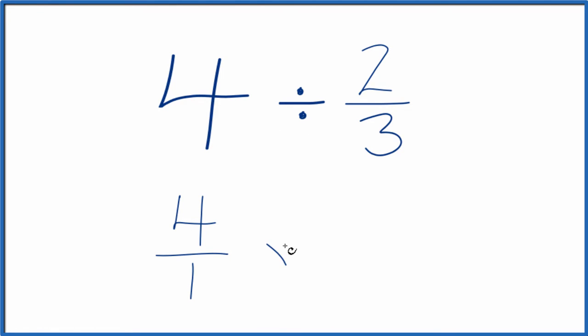Instead of division, let's multiply by the reciprocal of 2 thirds. And to take the reciprocal for a fraction, you move the numerator to the bottom and the denominator to the top. So we'd have 3 over 2. That's the reciprocal of 2 thirds.